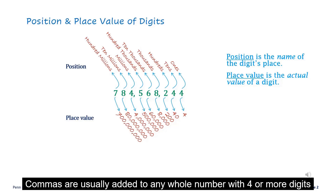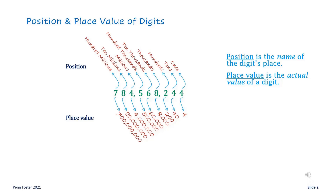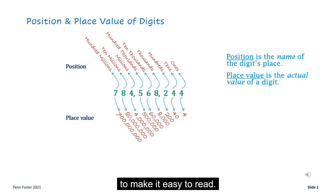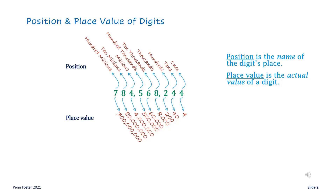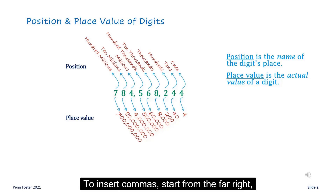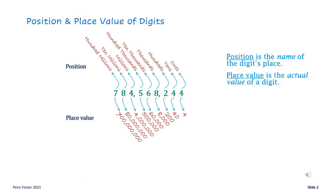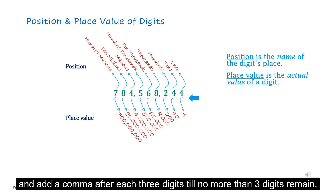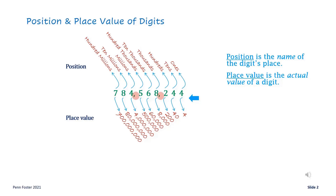Commas are usually added to any whole number with 4 or more digits to make it easy to read. To insert commas, start from the far right and add a comma after each three digits until no more than three digits remain.